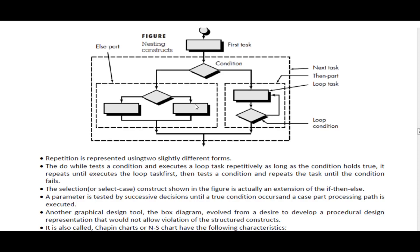Next, we will show the nesting constructs - nested if and nested for loop. First, we check the outer condition. If the outer condition is true, we check the inner condition. If that inner condition is true, we execute the then part. If the outer condition is false, we execute the else part. For the nested for loop, we check the first task, then check the condition after the first task. If the condition is true, we check the inner condition - this can be while, do, or do-while.